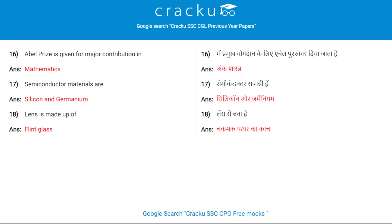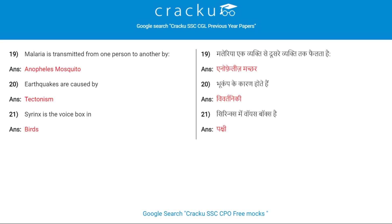Abel Prize is given for major contribution in mathematics. Semiconductor materials are silicon and germanium. Lens is made up of flint glass. Malaria is transmitted from one person to another by the Anopheles mosquito.